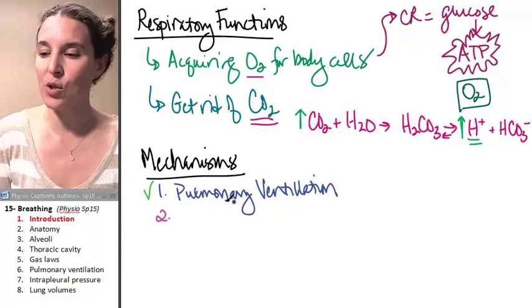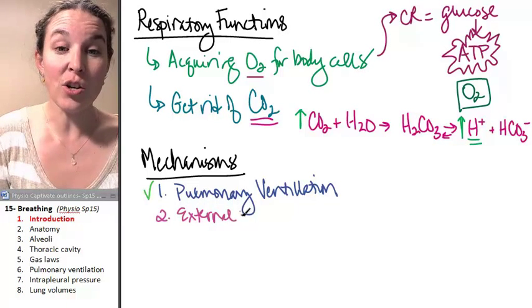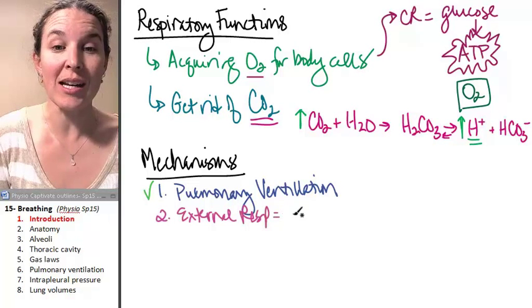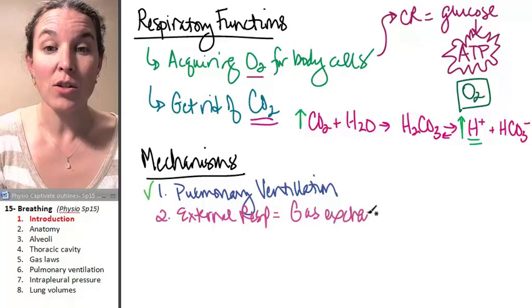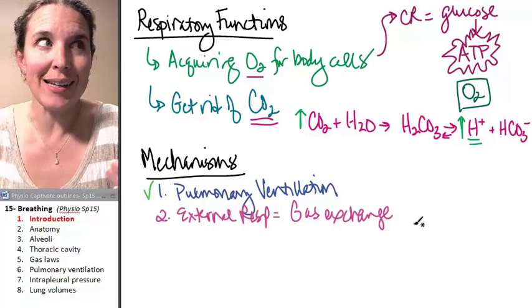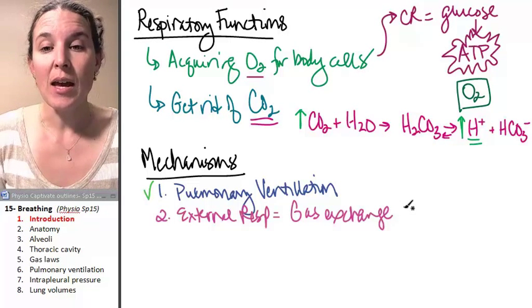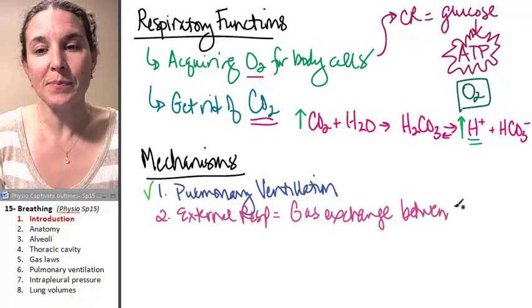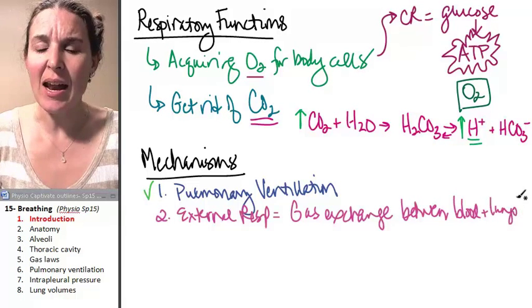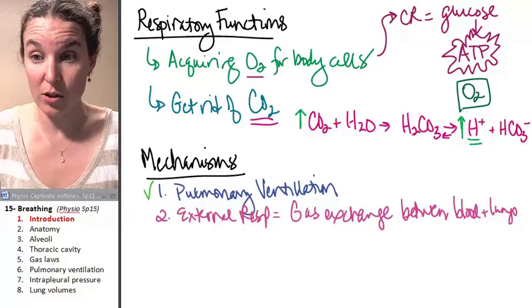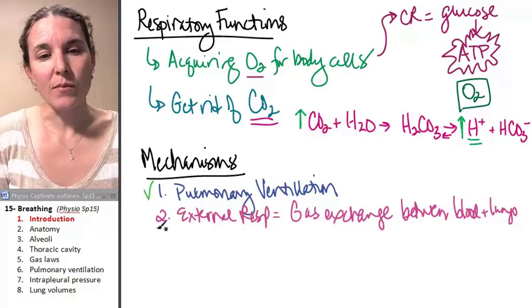In the next section, in the next lecture, we're going to talk about all the rest of this. Pulmonary ventilation, awesome. Who cares unless you do external respiration? And external respiration is basically gas exchange. So the movement of oxygen in and carbon dioxide out, that's the exchange of gases. And it's gas exchange between blood and lungs. And I'm going to tell you, we're going to learn where exactly this happens.